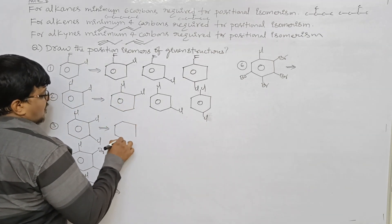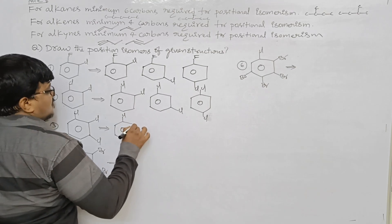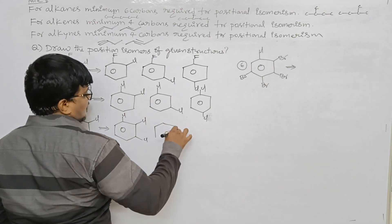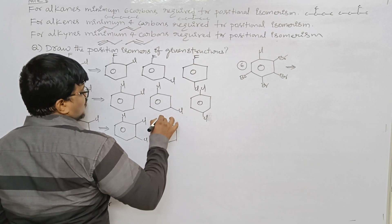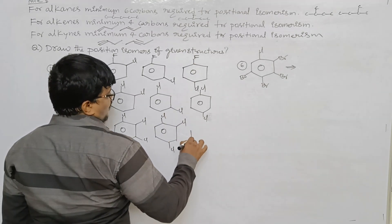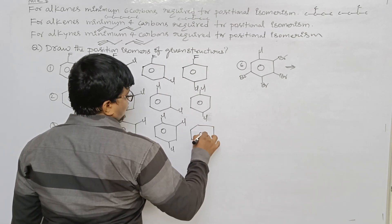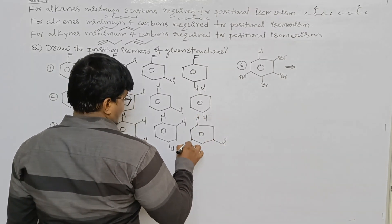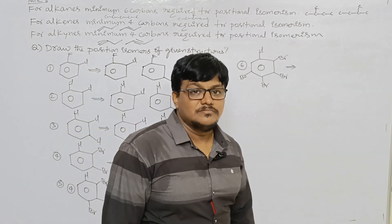For dichlorobenzene: 1,2-dichloro; 1,3-dichloro; and 1,4-dichloro — three arrangements possible. For trichlorobenzene: 1,2,3-trichloro; 1,2,4-trichloro; and 1,3,5-trichloro — only three arrangements possible.